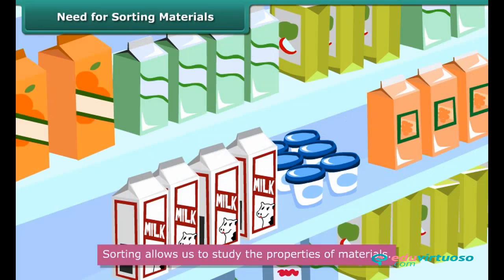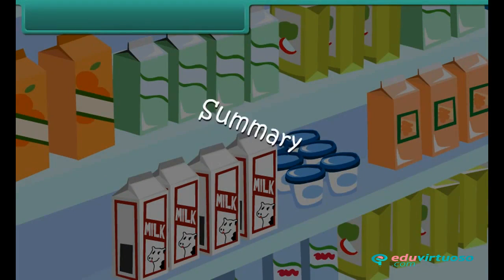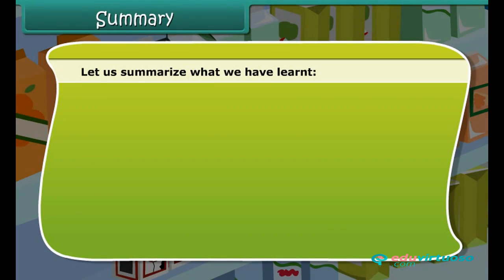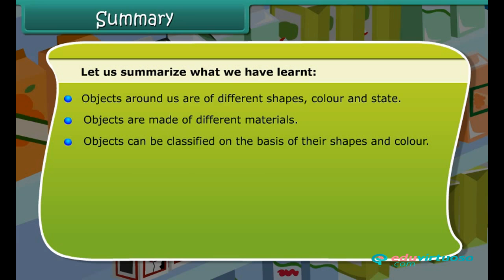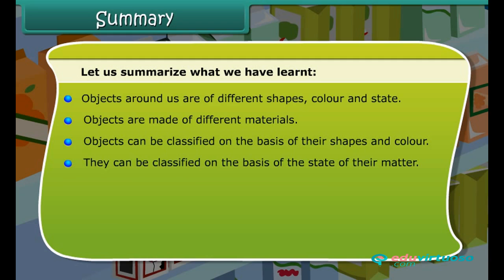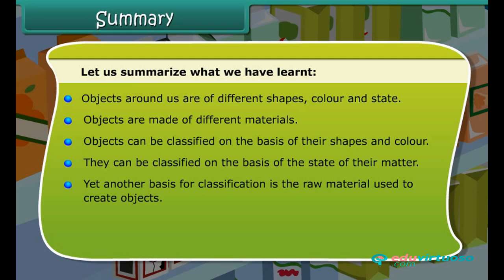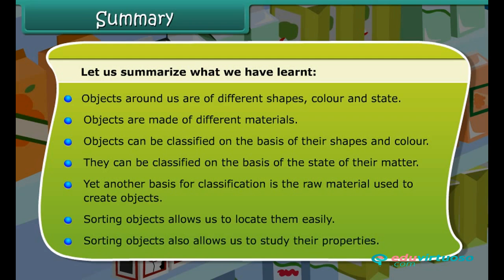Let us summarize what we have learned. Objects around us are of different shapes, colors, and states, and are made of different materials. Objects can be classified on the basis of their shape, color, state of matter, or the raw material used to create them. Sorting objects allows us to locate them easily and also allows us to study their properties.